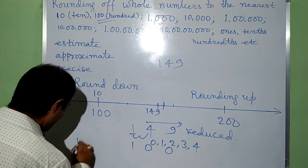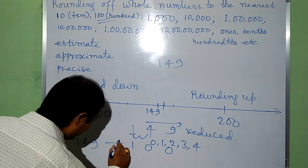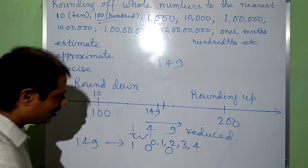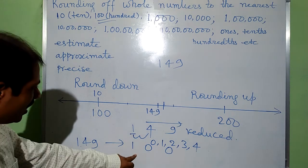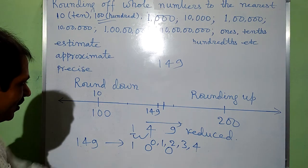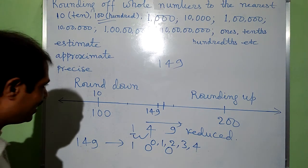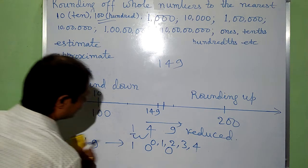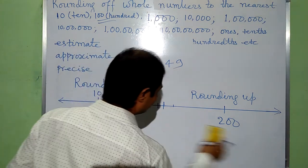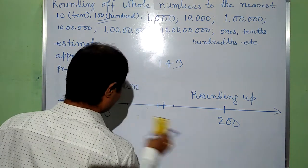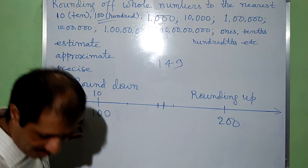So 149 will be rounded to 100, to the nearest 100. This is rounding down.